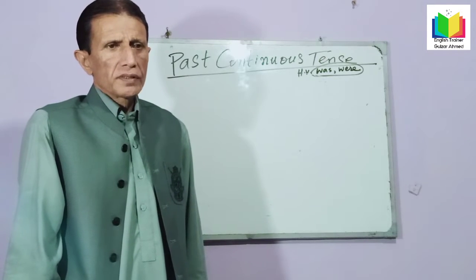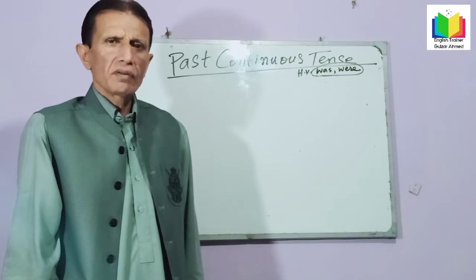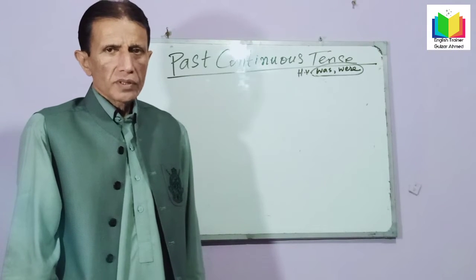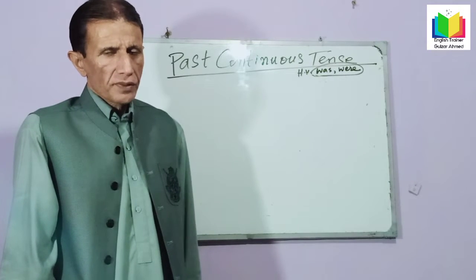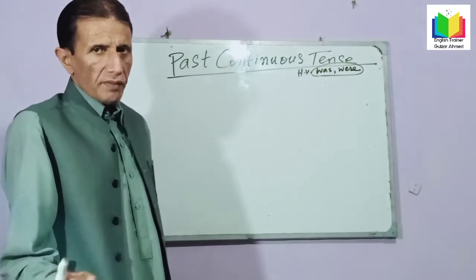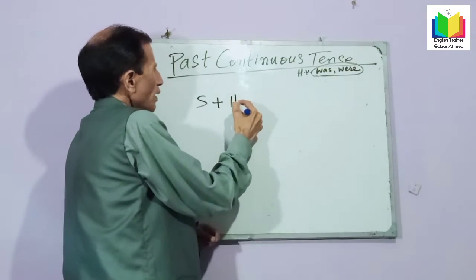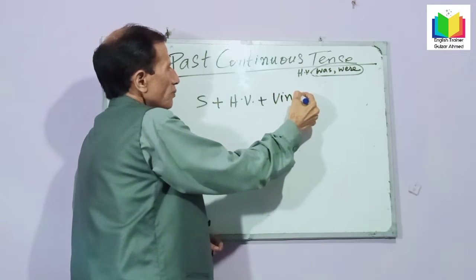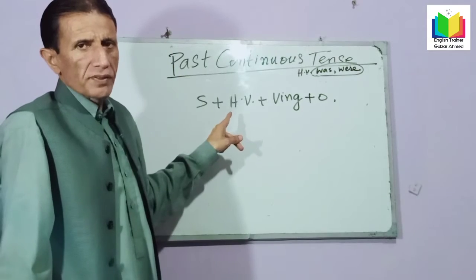Past Continuous and Present Continuous are almost the same, but there is only one difference in the helping verb. In Present Continuous Tense we use 'is', 'am', and 'are', and in Past Continuous Tense we use 'was' and 'were'. So its helping verbs are 'was' and 'were'. The formula I will write on the board: Subject plus helping verb plus first form of verb plus -ing plus object.